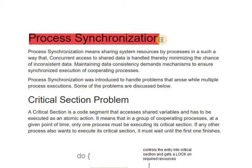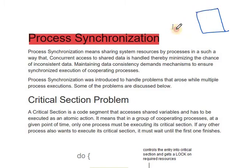What is process synchronization? We have already discussed when shared data is accessed by two different processes. Suppose A is a process and B is another process, and B is doing some writing operation. At the same time, if A tries to read, there will be some inconsistent data.